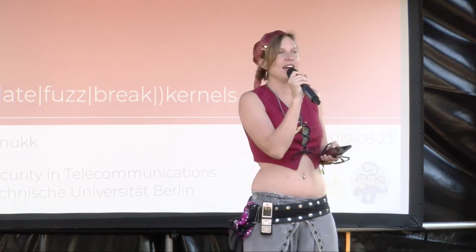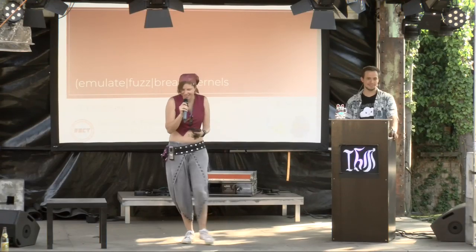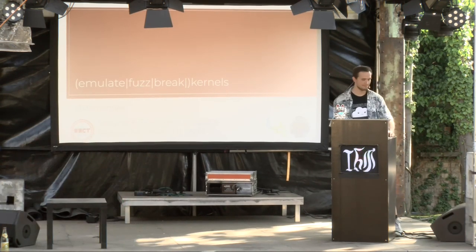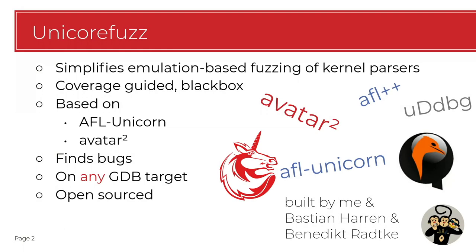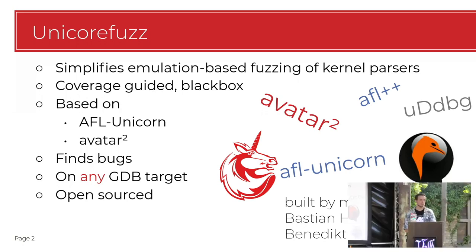Please give a big round of applause. Good morning everybody. I'm Dominic from TU Berlin and I'm going to talk a bit about kernel fuzzing. We created a little tool called Unicore Fuzz - that's me, Bastian, and Benedict. It's based on a lot of other tools. It uses AFL Unicorn by Nathan Foss and Avatar2 from Uricom, finds bugs, and works on anything you can attach a GDB target to. And it's open source.